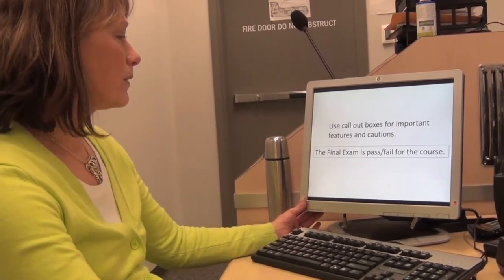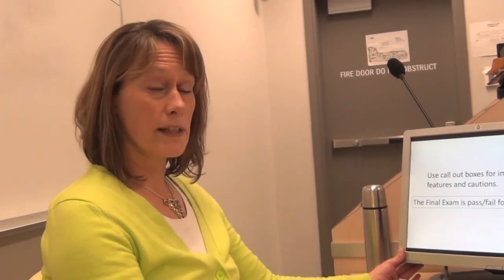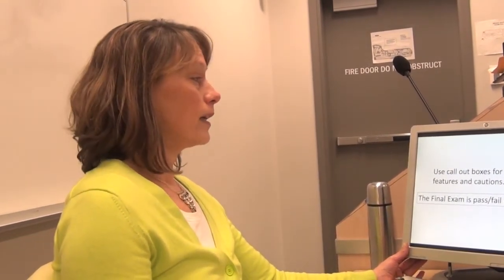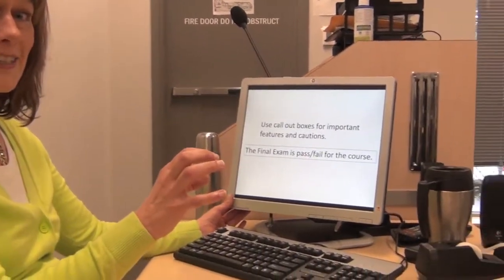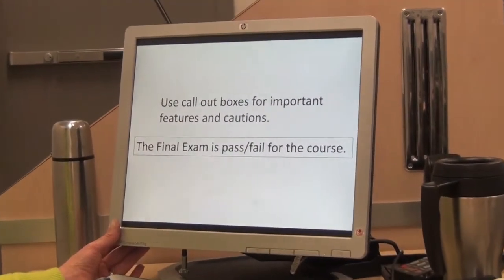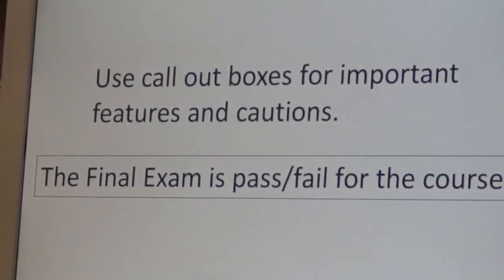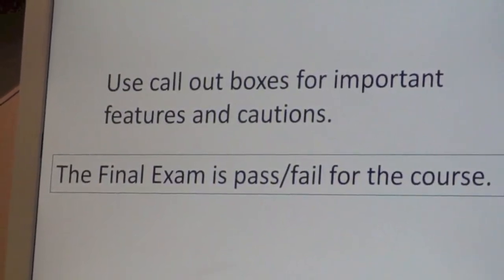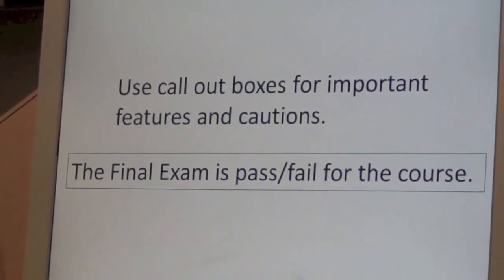One last thing from copywriting: for really critical things, important features, or warnings, we use call-outs. A great way to do a call-out is to put a box around it. I do that sparingly so there aren't too many in the syllabus, but I save it for really important things — like 'the final exam is pass-fail for the course.' I prefer boxes over color because sometimes students will only have black ink in their printer and color won't show up. So I try to keep it as simple as possible.